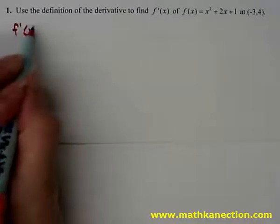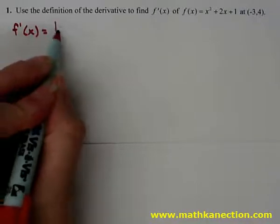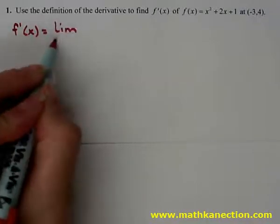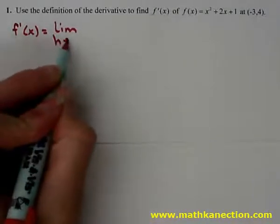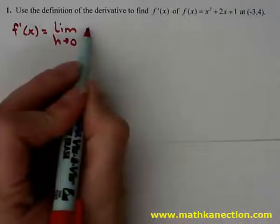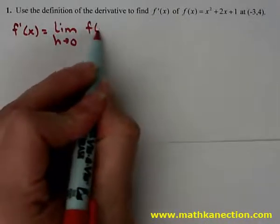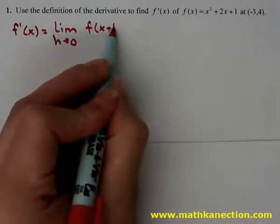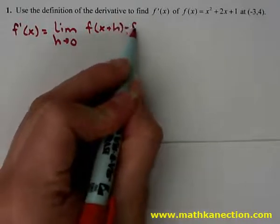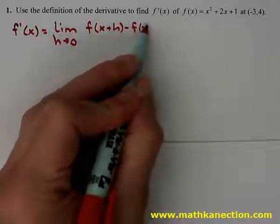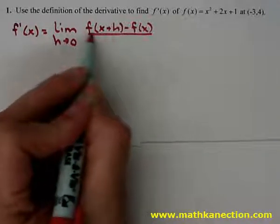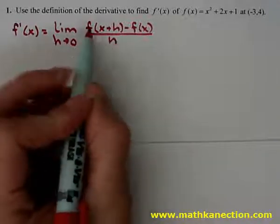We're going to use the definition of the derivative to find f prime of x of the function at the point negative 3 comma 4. So f prime of x is equal to the limit as h approaches 0 of f of x plus h minus f of x, all over h.